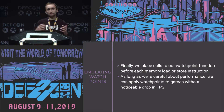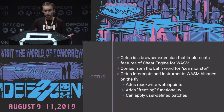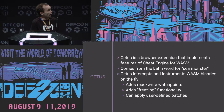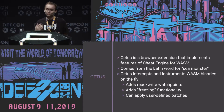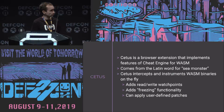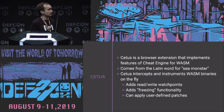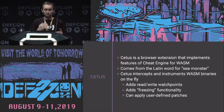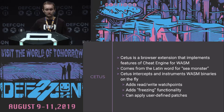Now that we understand this process, I wanted to see if I could emulate Cheat Engine for WebAssembly. So I built another tool called Cetus — the name comes from the Latin word for sea monster. Cetus is a browser extension that intercepts and instruments WebAssembly binaries in your browser on the fly, before they're executed. That instrumentation adds read and write watchpoints, the ability to freeze memory so that attempts to change a value don't take, and the ability to apply user-defined patches for code patching.